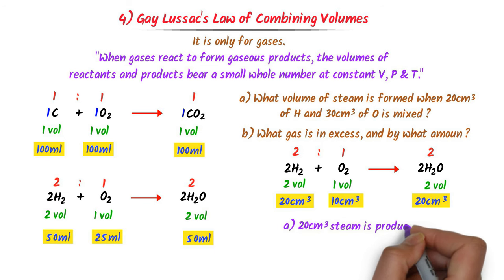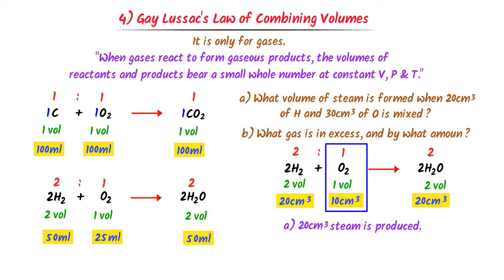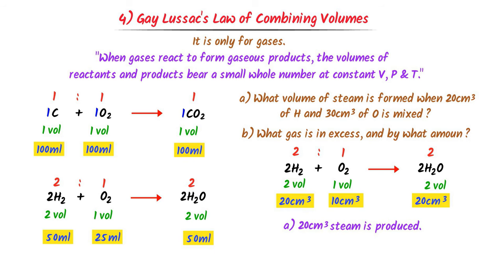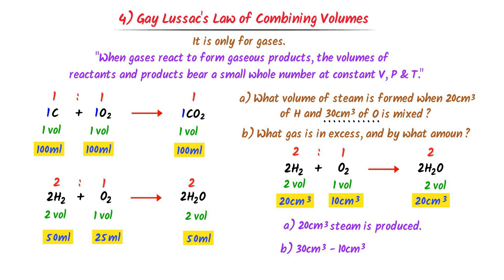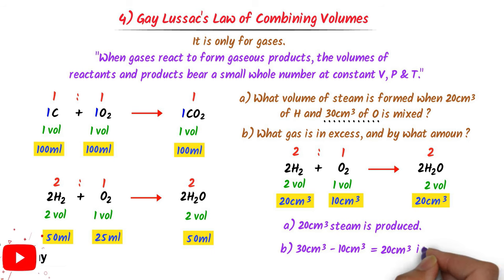Hence 20 cm³ of steam is produced. Since we need only 10 cm³ of oxygen to react with 20 cm³ of hydrogen, but 30 cm³ of oxygen was taken, the excess oxygen is 30 minus 10 = 20 cm³. So 20 cm³ of oxygen is in excess. Gay-Lussac's law is all about the volumes of reactants and products.